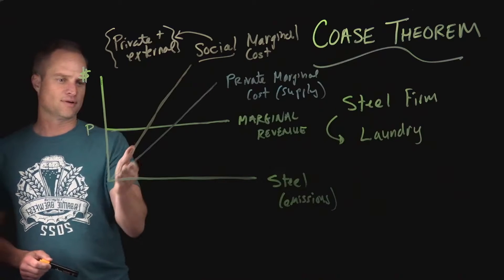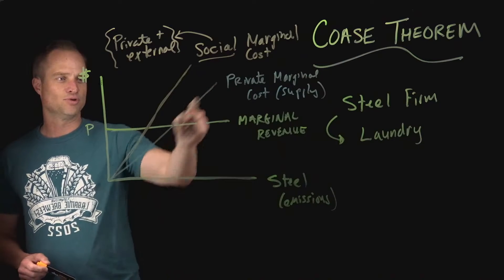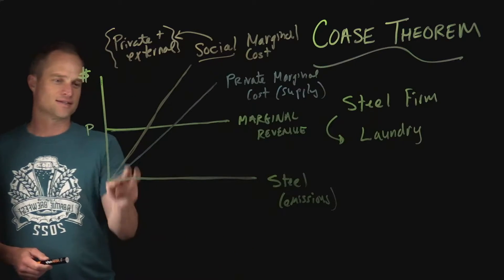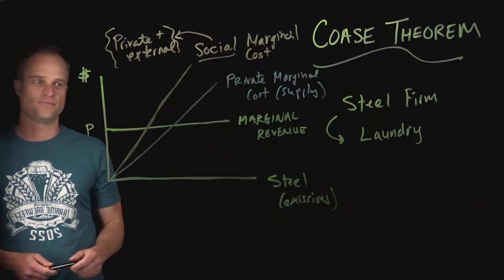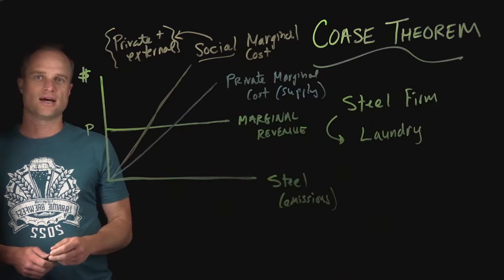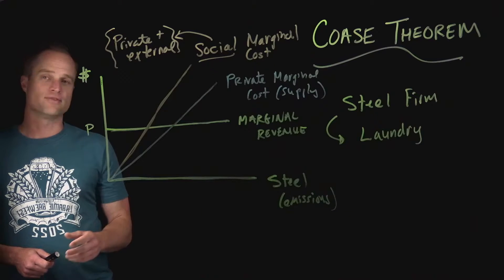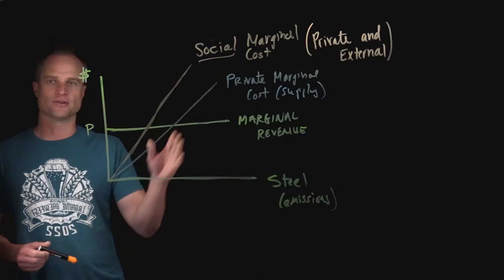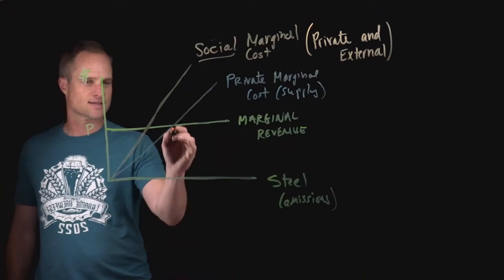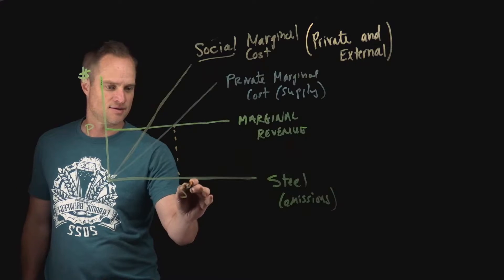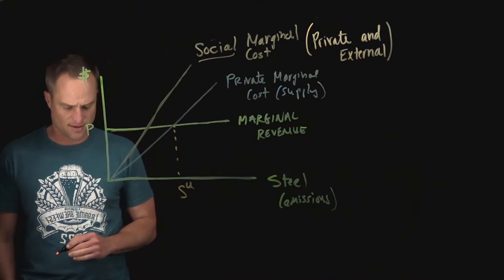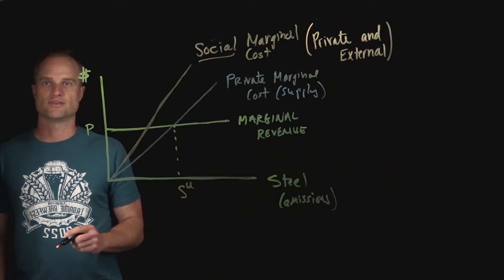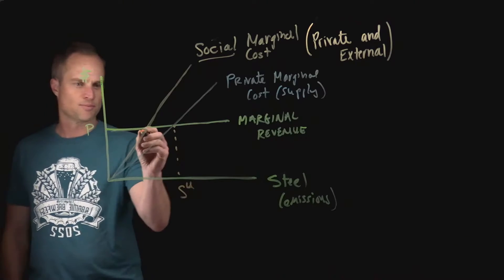While the steel firm only internalizes the private marginal cost — the blue line — society, which in our simple case is these two firms, bears the external cost through the laundry firm. The negative externality shows up as the gap between these two lines. Now, the first thing I want to indicate on the horizontal axis is the profit-maximizing level, which we'll call S superscript U — kind of like the unregulated market — where the firm's marginal revenue equals its marginal cost.